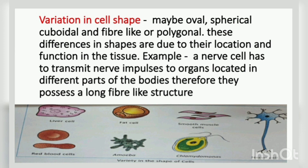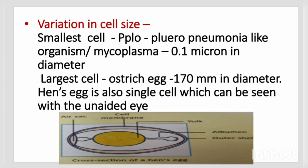Cells can also be of different sizes. The smallest cell known to us is the PPLO — Pleuro-Pneumonia-Like Organism — also known as mycoplasma, with a size of 0.1 micron (0.1 micrometer) in diameter. The largest cell known to us is the ostrich egg, which is 170 millimeters in diameter and can even be seen with the naked eye.